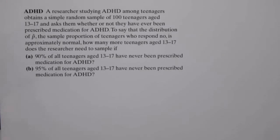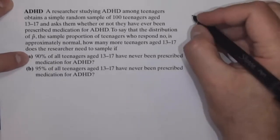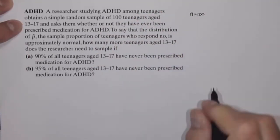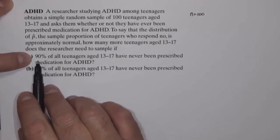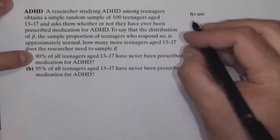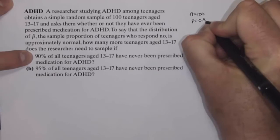Okay, so here's the deal. In this problem, we're told that the researcher chose a sample of 100 individuals. In Part A, we're asked: what if the proportion of teenagers who've never been prescribed medication for ADHD is 0.90? So Part A is speculating what if p equals 0.90.